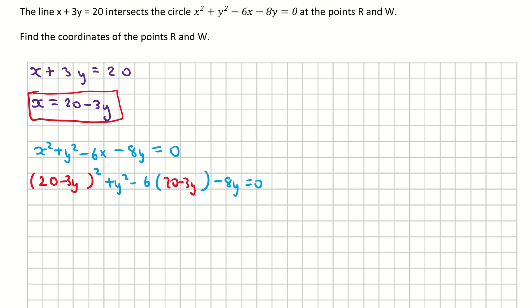At the start here I have (20 - 3y)², which means it's multiplied by itself: (20 - 3y)(20 - 3y). Plus y². I'm going to multiply in that 6 by the 20, which gives me minus 120, and then the minus 6 by the minus 3y, which gives me positive 18y. And then don't forget my minus 8y at the back.